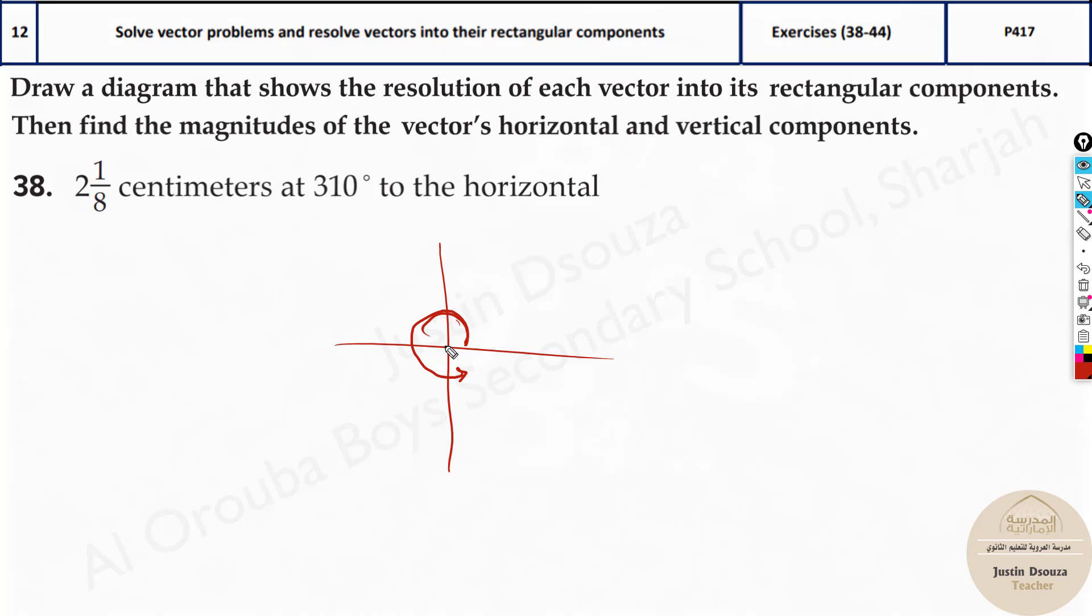And then you need to draw a 2 1/8 line. This is equivalent to 8 times 2 is 16 plus 1 will be 17 by 8, that is about 2.1. Let us draw a line which is about 2.1 centimeters long, and the angle is 310 degrees. This is the figure.